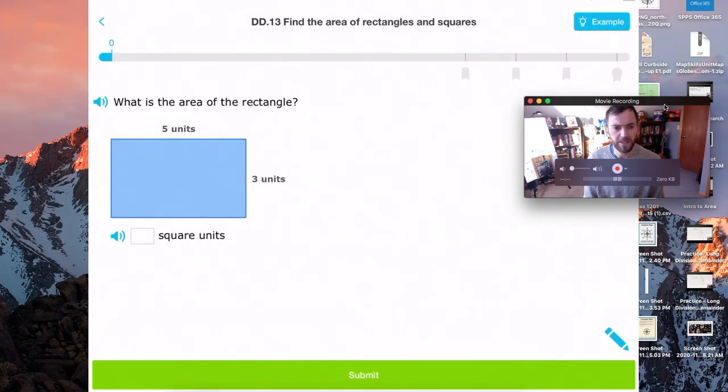So here we have a rectangle with five units, that's the base, that's across, five units across, and three units tall. That's the height, three units tall.